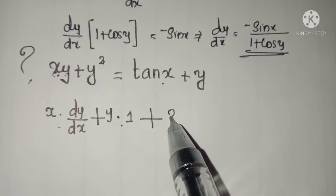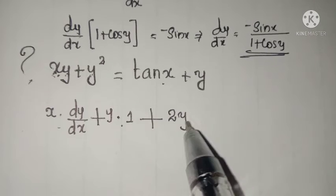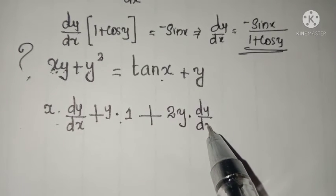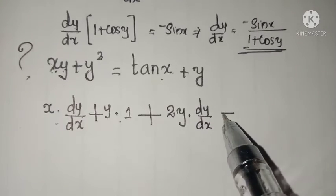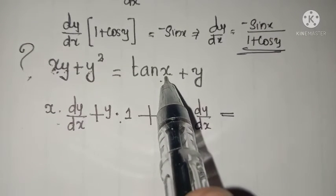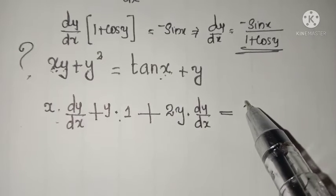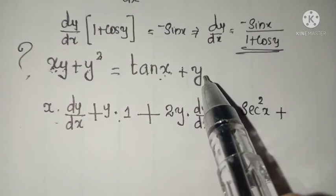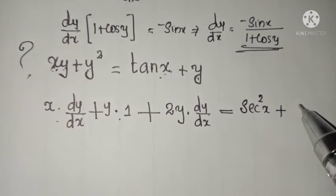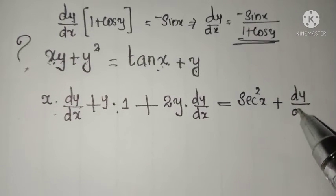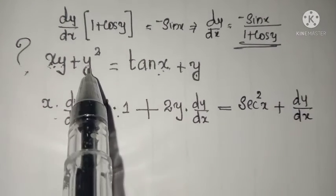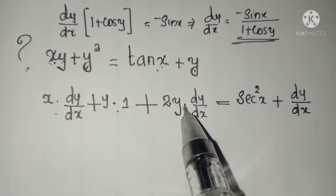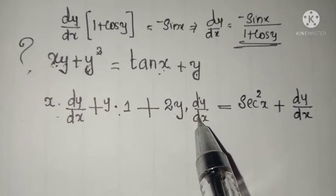Plus y squared — derivative of y squared with respect to x is 2y dy by dx — equal to derivative of tan x, which is sec squared x, plus derivative of y with respect to x, which is dy by dx. Note: derivative of y squared is 2y then dy by dx.